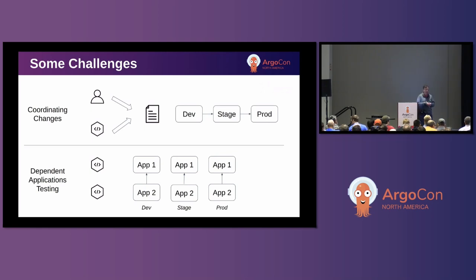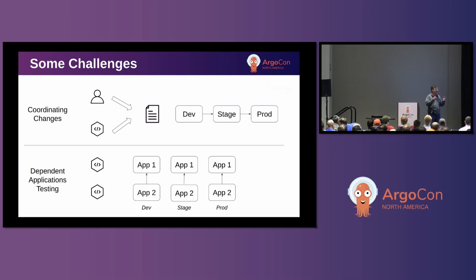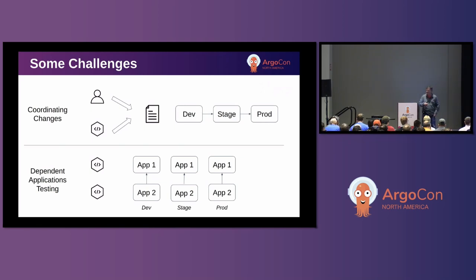The other thing that comes into play is dependent applications testing — there was an earlier question about this in my previous session. I've got a couple of different applications that are dependent on each other, and I want to test and deploy them more holistically. If we lived in the world with rainbows and unicorns where microservices were perfect and infinitely backwards and forwards compatible, things would be great. But unfortunately that's not the world we live in for the most part. Most enterprises will have these dependencies where they want to manage things more together.